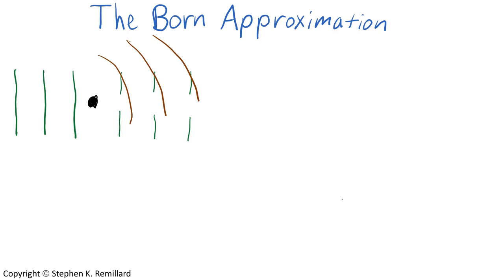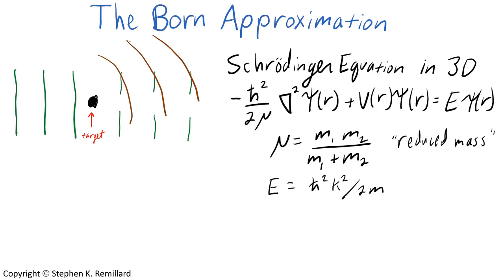Here's our scattering problem. You have a plane wave incident on a scattering target. After scattering, some of the plane wave continues unscattered and you create some spherical wave. Our main concern is with the spherical wave. Because they're waves, they're described by the Schrödinger wave equation. In three dimensions, it has the Laplacian operator as the derivative.